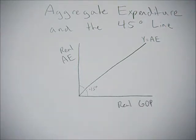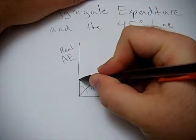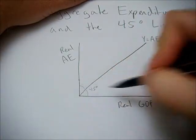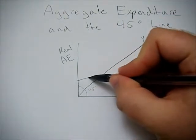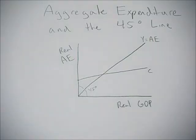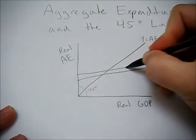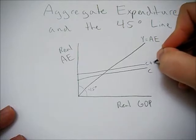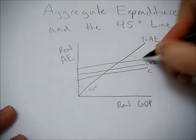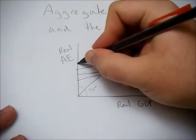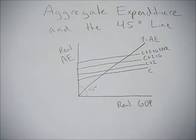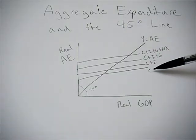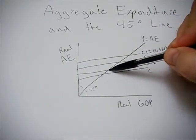We have to draw our aggregate expenditure lines. What happens is we have some positive amount of consumption that occurs regardless of what real GDP is in the economy, and then as real GDP increases we see consumption increasing. We also have a planned investment amount going on in the economy regardless of what GDP is, so we can add that in — this is C plus I. We also have government spending, C plus I plus G, as well as net exports, C plus I plus G plus NX. This shows how aggregate expenditure can be different from real GDP if these points aren't equal.